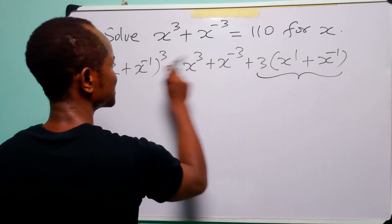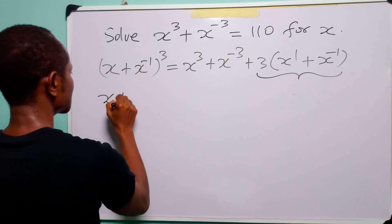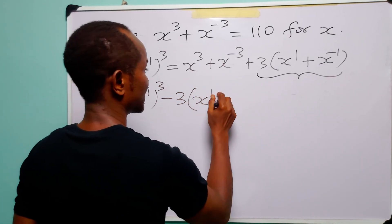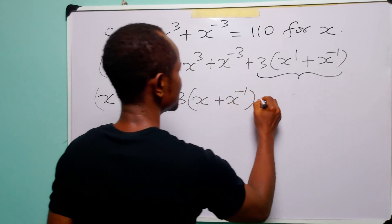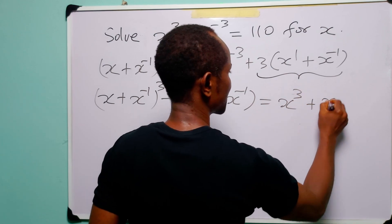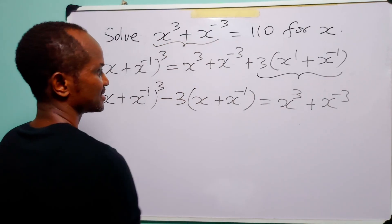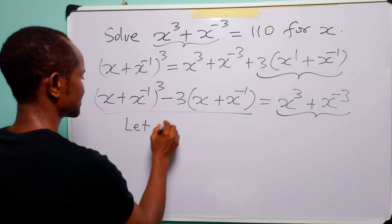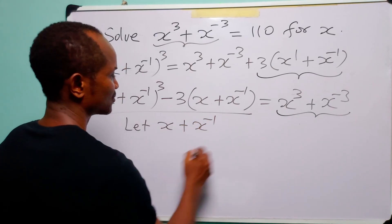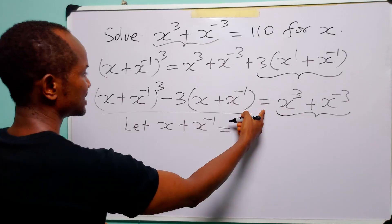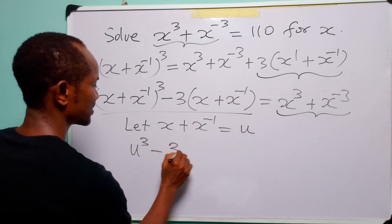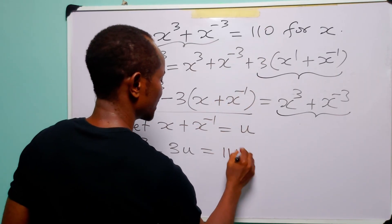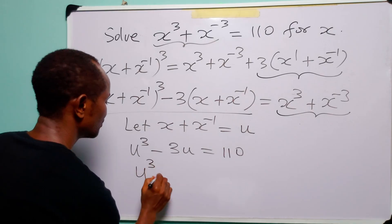We subtract 3(x + x⁻¹) from both sides of the equation, giving (x + x⁻¹)³ − 3(x + x⁻¹) = x³ + x⁻³. We let u = x + x⁻¹, so this becomes u³ − 3u = 110, and therefore u³ − 3u − 110 = 0.